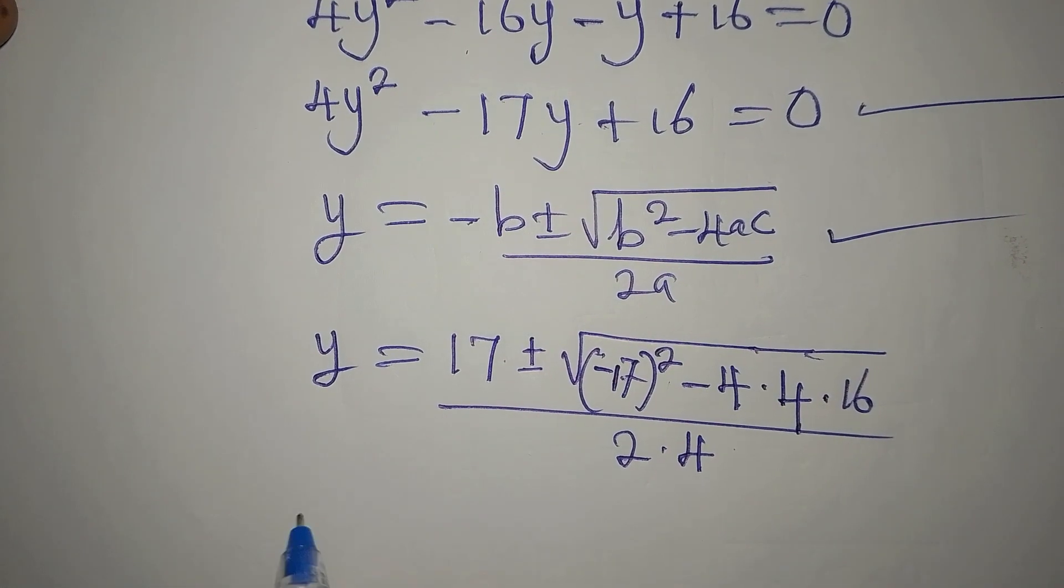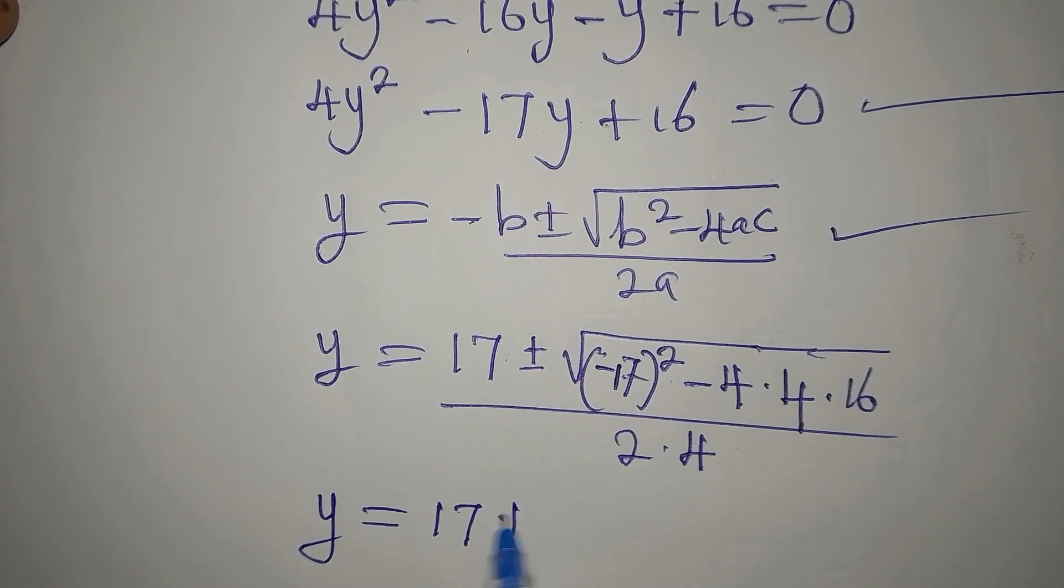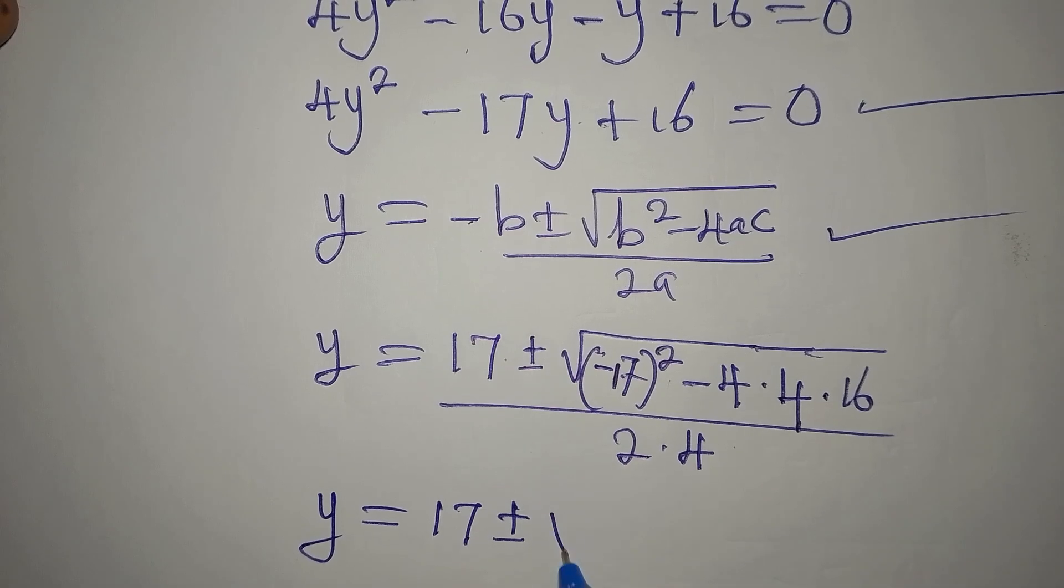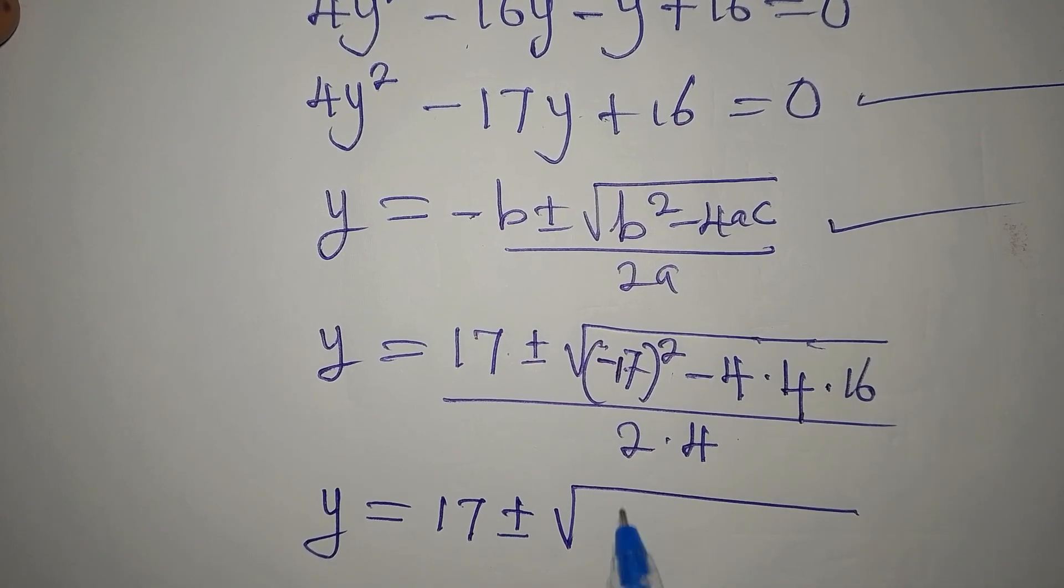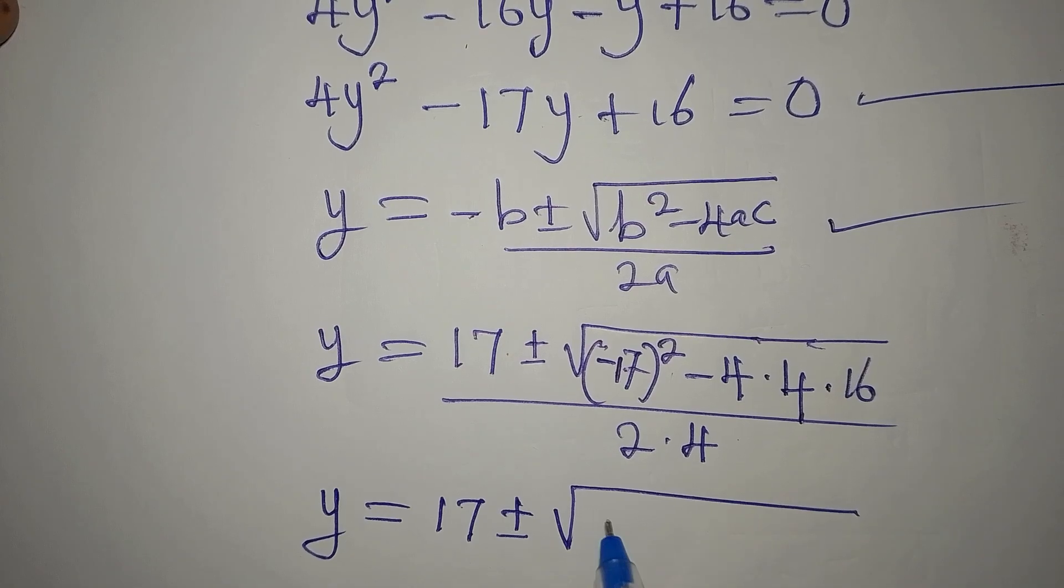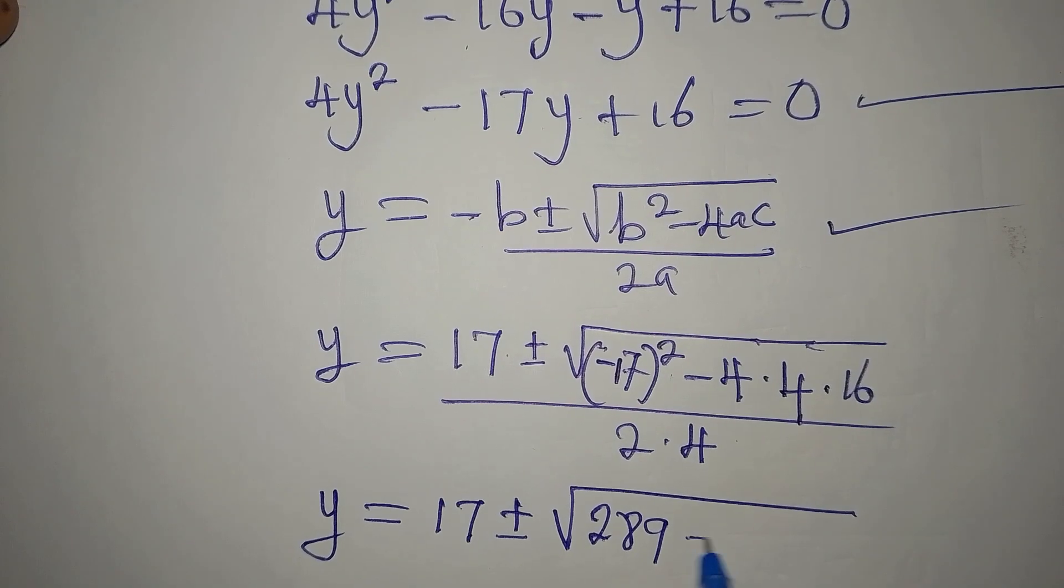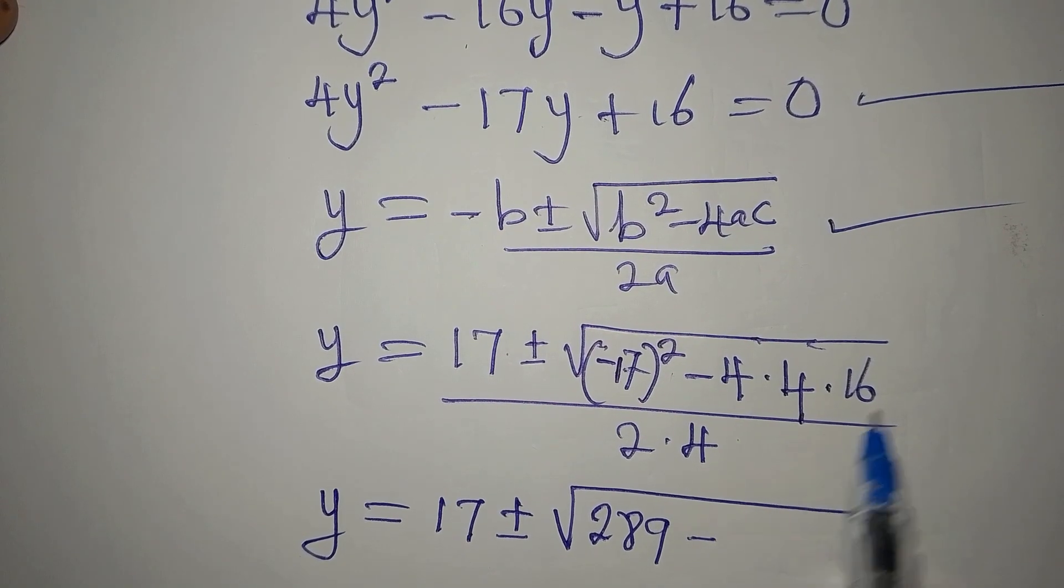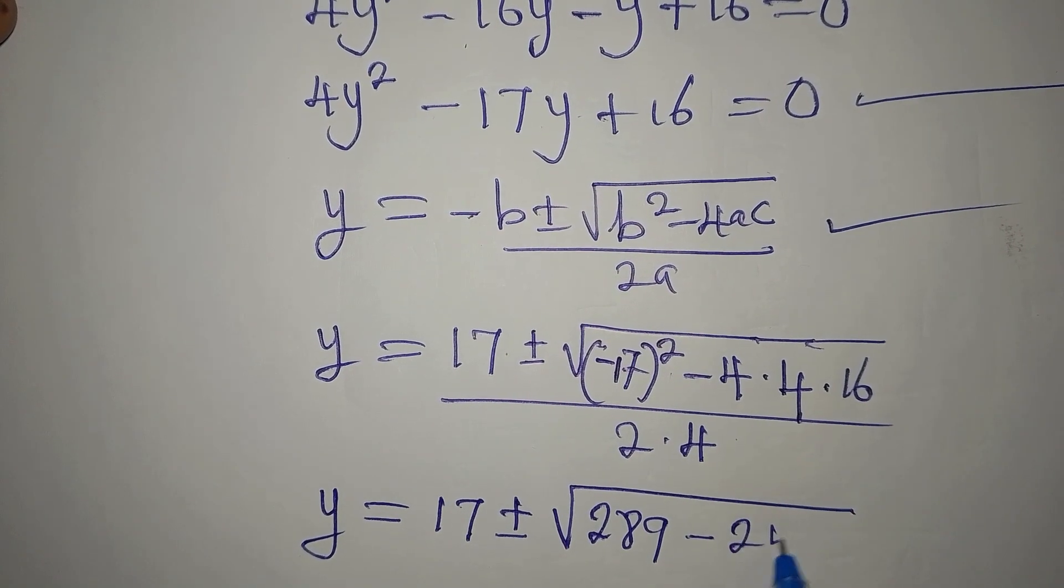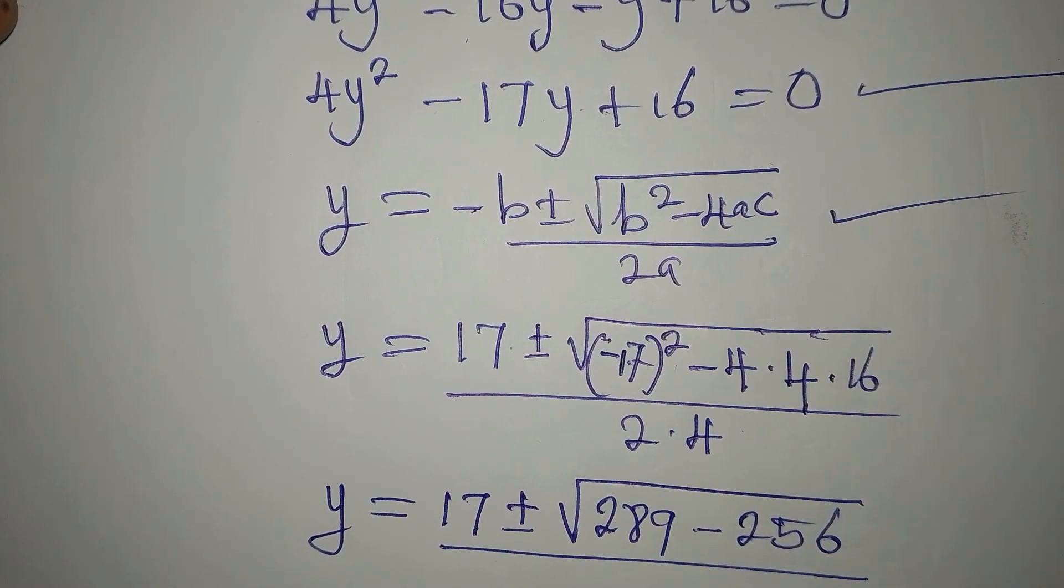So our y is going to be 17 plus or minus the square root of minus 17 squared will give us positive 289.